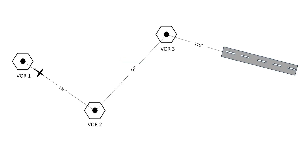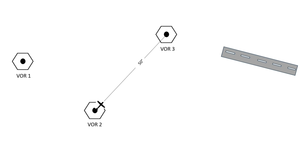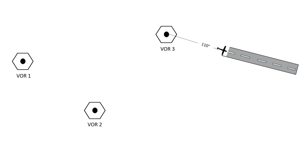Assume a scenario where your GPS and IRS are not working and you want to land using a VOR approach. From aeronautical charts you can get information about nearby VOR stations and the radials you need to follow to land at the airport. Initially you enter the frequency of VOR 1 into your MCDU and fly radial 135 outbound. Once you reach VOR 2, you enter its frequency and track radial 050 outbound. Once you reach VOR 3, enter its frequency and track radial 110 to land at the airport.